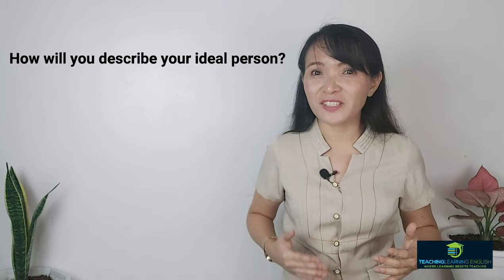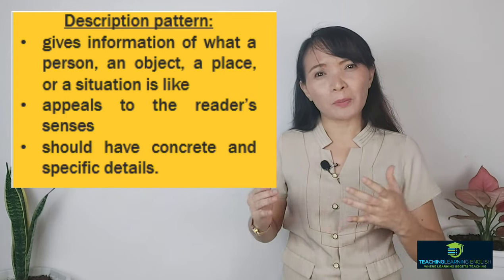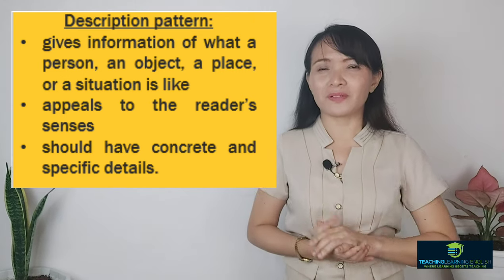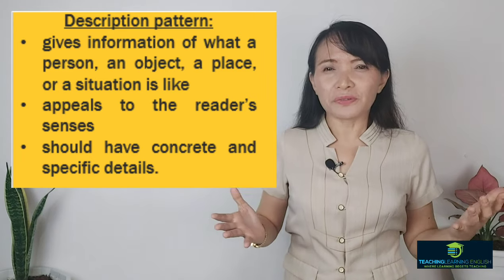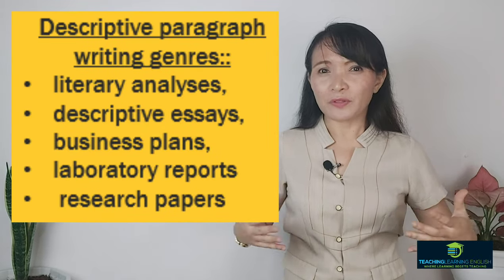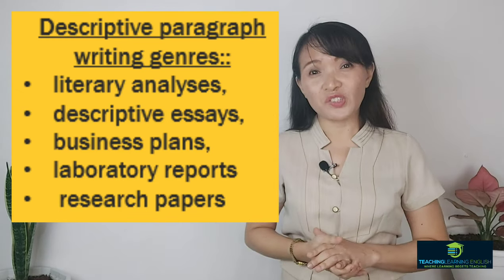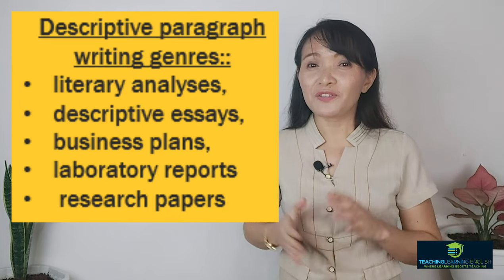We are heading to the last two patterns. The fourth is description. Description gives information about what a person, an object, a place, or a situation is like. It appeals to the reader's senses — it makes the reader see, hear, taste, smell, or feel the subject. If you describe a thing, see to it that the reader can paint a picture in the mind based on your description. It should have concrete and specific details. Literary analysis, descriptive essays, business plans, laboratory reports, and research papers are some writing genres that use descriptive paragraphs.